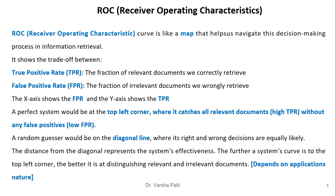ROC — Receiver Operating Characteristics — is a very famous metric for binary classification. It is a map that helps us navigate the decision-making process in information retrieval. It shows the trade-off between the true positive rate (TPR) and false positive rate (FPR). TPR is the fraction of relevant documents correctly retrieved, and FPR is the fraction of irrelevant documents wrongly retrieved. The x-axis shows FPR and the y-axis shows TPR. A perfect system would be at the top-left corner, catching all relevant documents without any false positives. A random guesser would be on the diagonal line. The further the system's curve is toward the top-left corner, the better it is at distinguishing relevant from irrelevant documents.